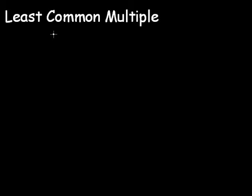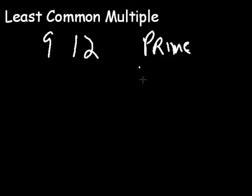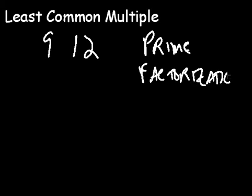Let's find the least common multiple of two numbers. Let's take 9 and 12. What we need to do is get the prime factorization of both numbers.